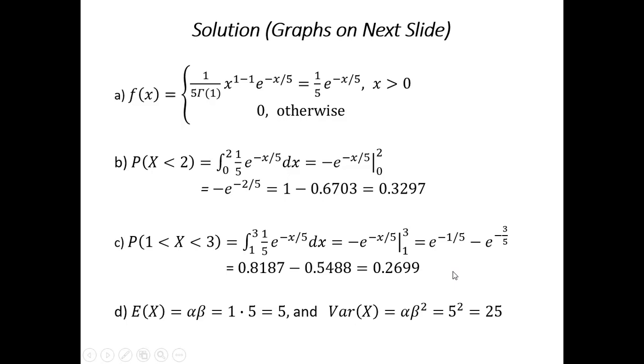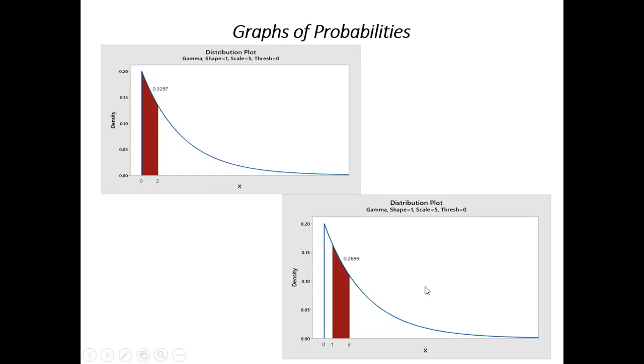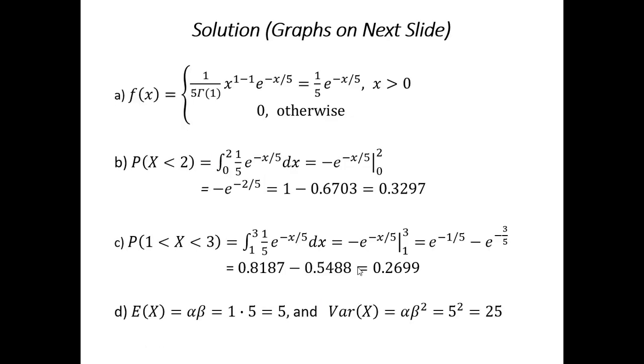The graph illustrating the probability looks like this. Here we get this strip. x is between 1 and 3. We know the curve looks like an exponential. And Minitab gives us the probability right here. 0.2699. Come back here. You can see it matches up. So, everything is good and consistent.